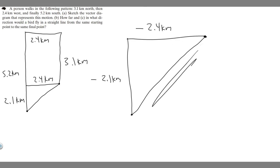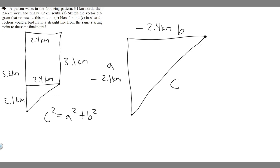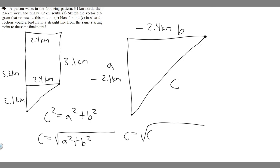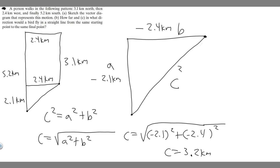For Part B, we're trying to find how far they go — this is their displacement distance. In order to find this length, we use the Pythagorean theorem: C squared equals A squared plus B squared, so C equals the square root of A squared plus B squared. So C equals the square root of (−2.1)² plus (−2.4)², which gives us 3.189, and rounding to the tenths place, C equals 3.2 kilometers. That's your answer to Part B.